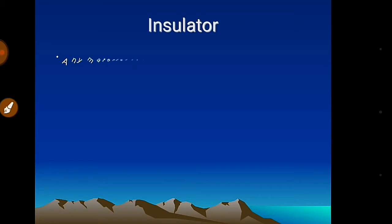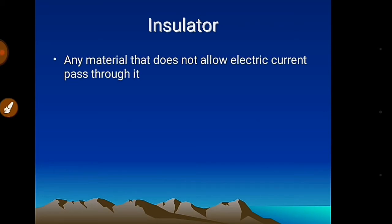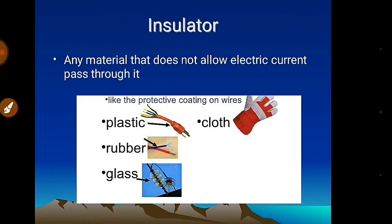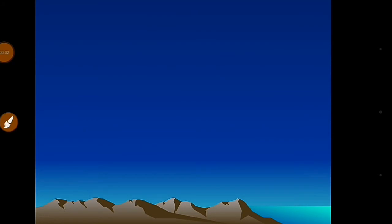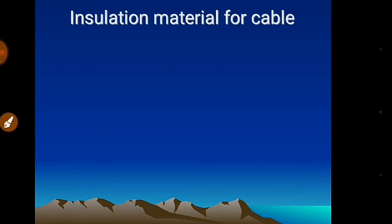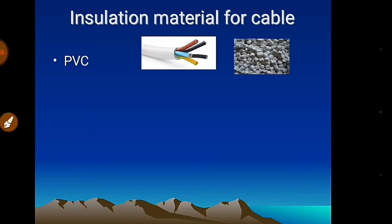Any material that does not allow electric current to pass through it is called an insulator — for example, plastic, rubber, glass, and cloth. PVC is the most common insulation material for low voltage cables. It is a low cost material with a normal working temperature of 72–105°C and a short circuit temperature of 140°C.